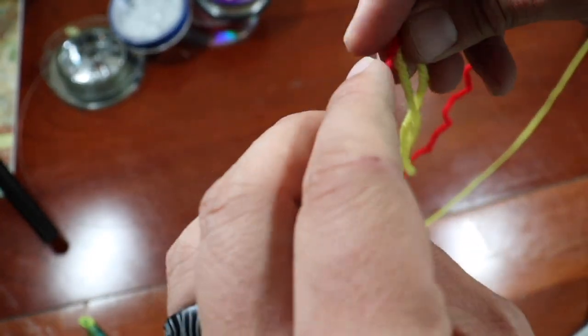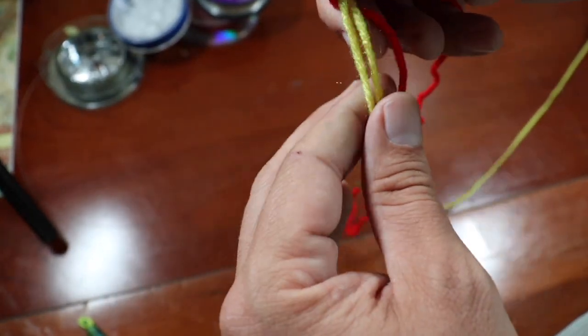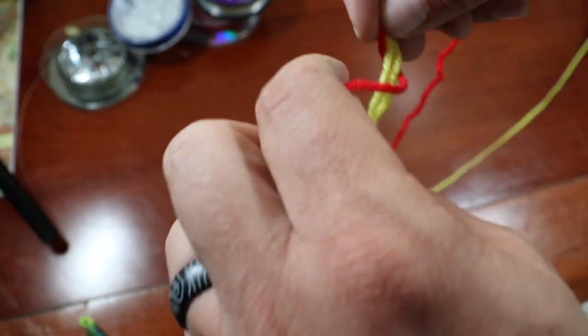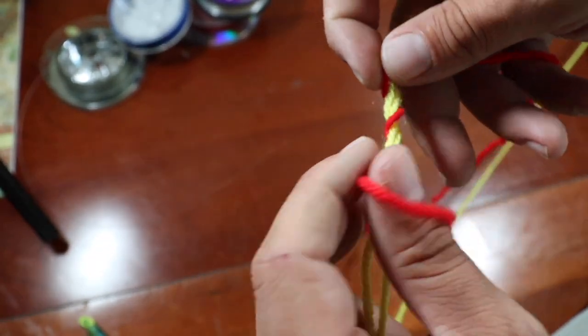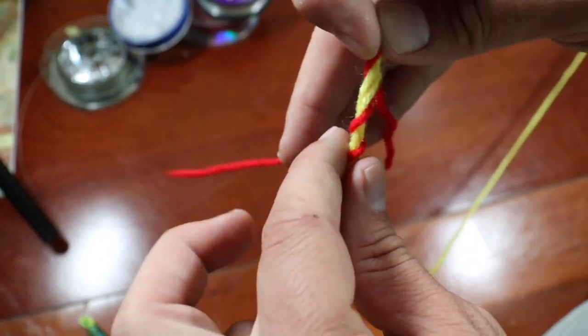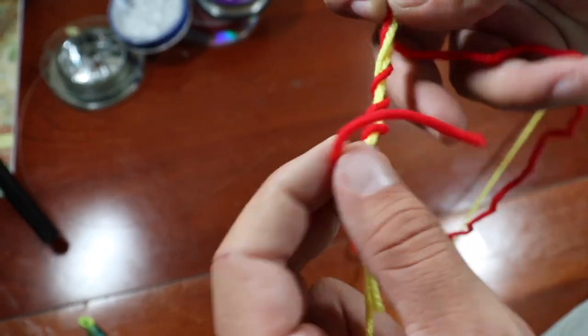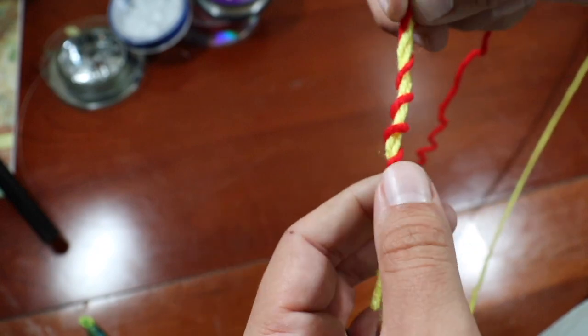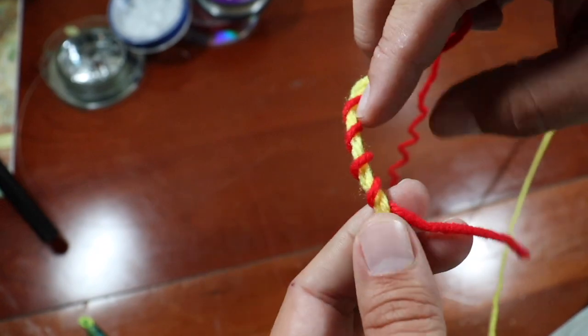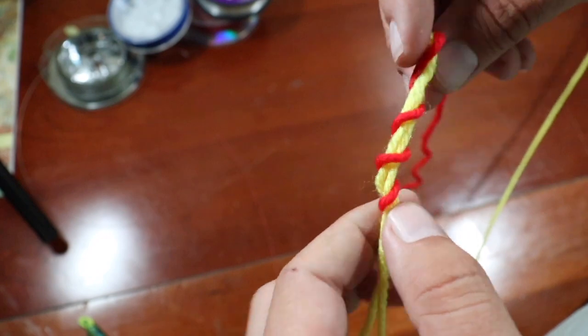Now what you're going to do is you're going to wrap the braid around the mono once, twice, three times, four times, five times. You can keep going six to eight times. I'm just going to do five for the sake of the demonstration here.